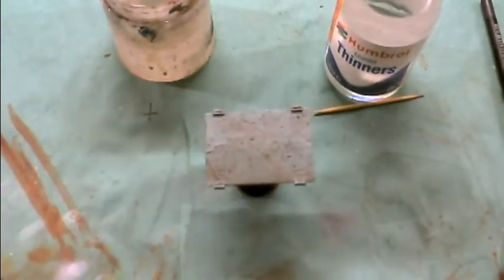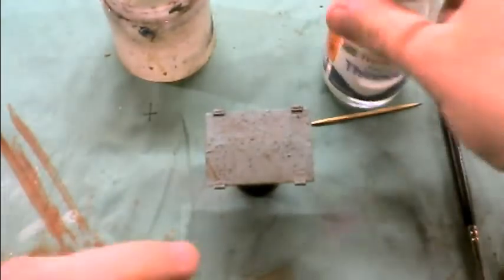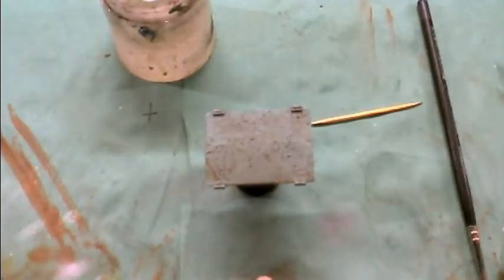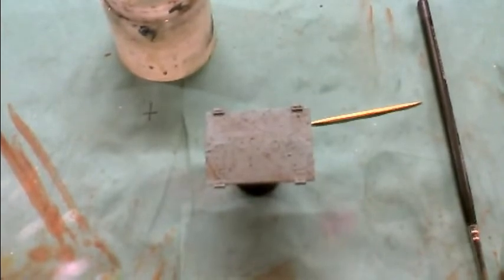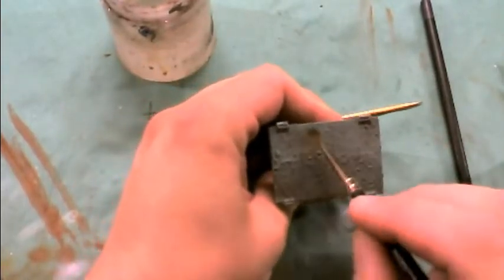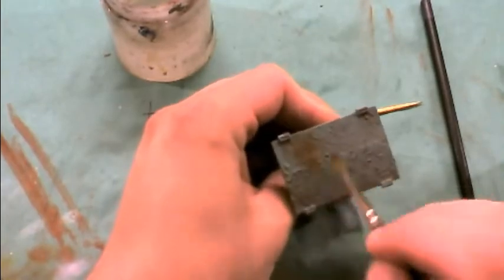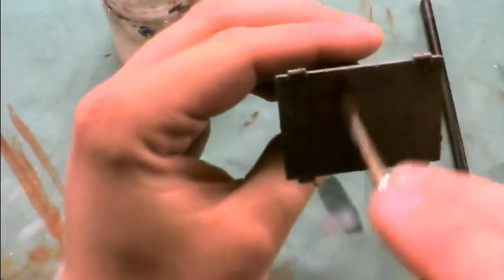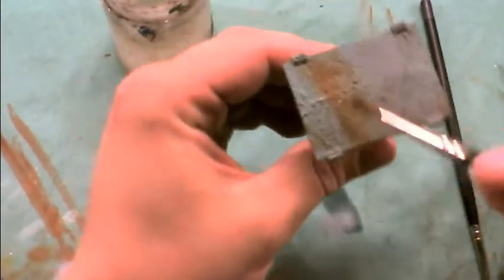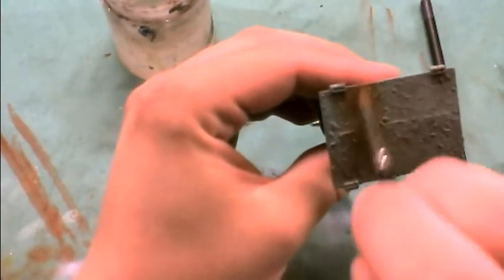So now, we've got our paint chipped. We'll then take a second brush, and we'll take our Humbrol enamel thinners, and we'll just moisten the brush with thinners. What will happen is you just work this over the scratches, and as you can see, work them in one way, one line, and when you're happy, this should chip away the paint as well.